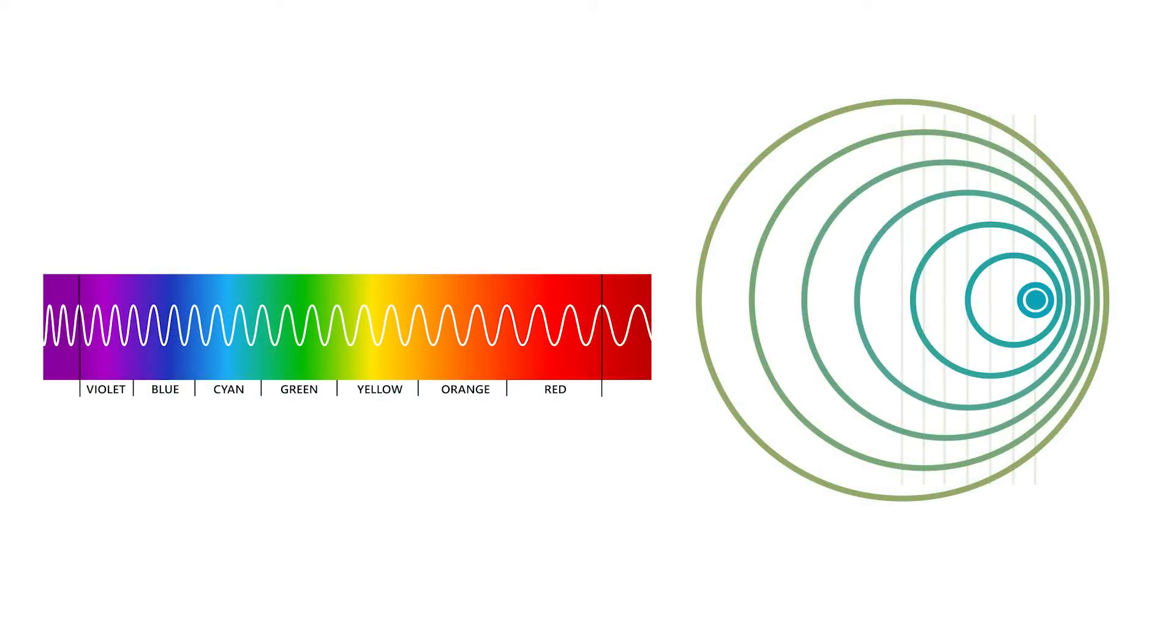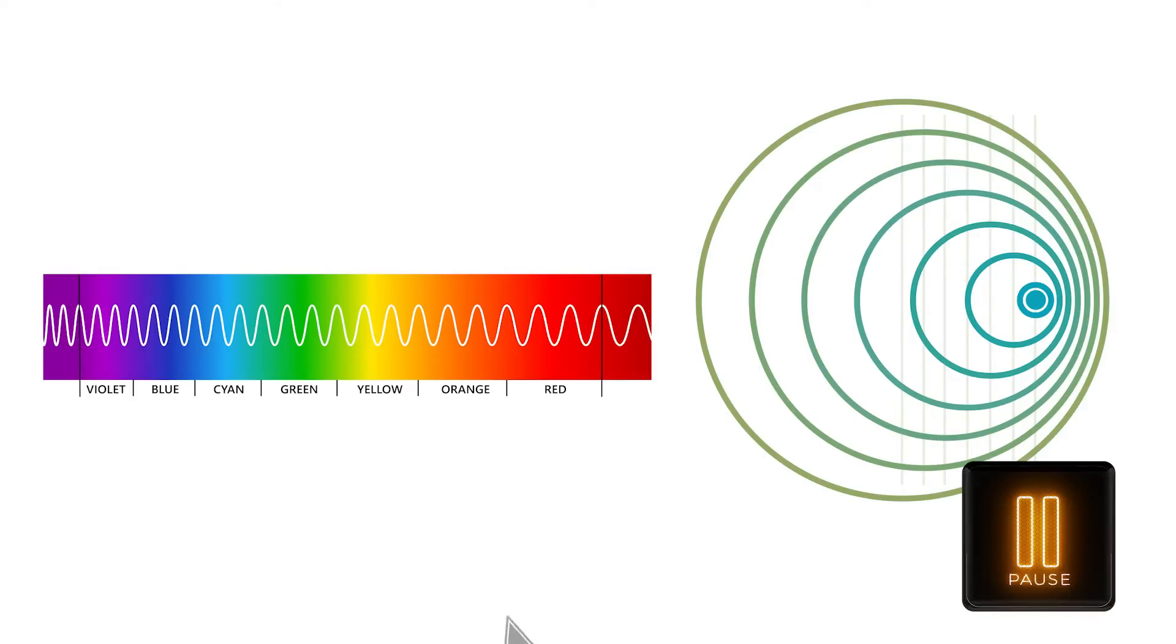Now, think about how wavelength impacts what we see, and how this change in wavelength would change what astronomers observe when they look at moving galaxies. Pause the video here, and record your thoughts in your guided notes.